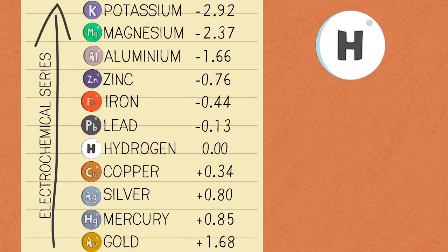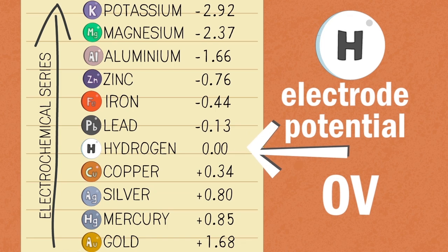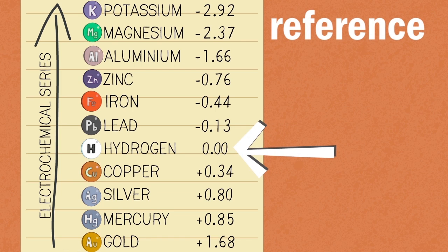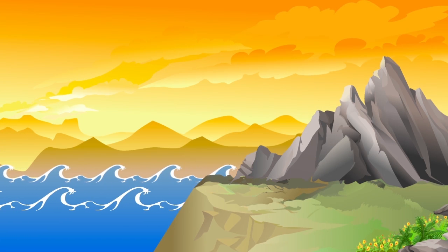The answer is that hydrogen has an electrode potential of zero volts. The significance of this is that it acts as a reference. All other electrode potentials are measured against this value.